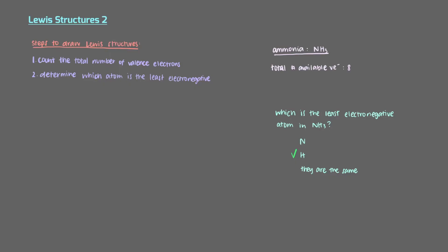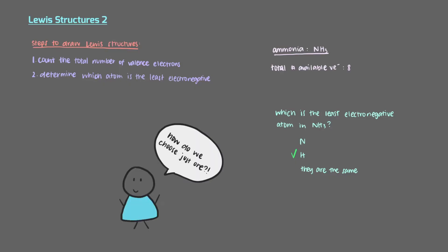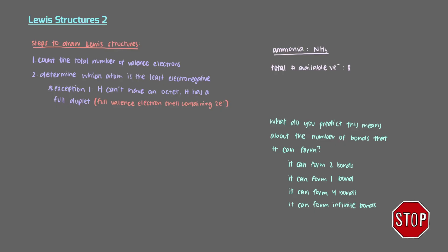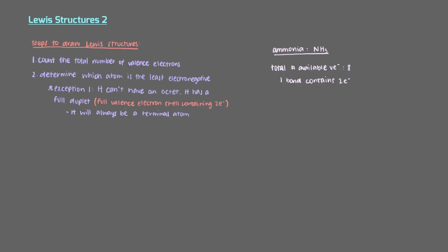Hydrogen is the least electronegative atom in ammonia, but there are 3 of them. So how do we know which hydrogen will go in the middle? This is where we run into the first few exceptions to our list of rules. Hydrogen's valence electron shell can only hold a maximum of 2 electrons, so it's not able to have an octet. Hydrogen's rule is that it always wants to have a full duplet, or a full valence electron shell containing 2 electrons. This means that hydrogen will only ever be able to form 1 bond with atoms, so it can't be a central atom — it will always be a terminal atom. So in this case, nitrogen will be in the middle even though it is more electronegative than hydrogen.